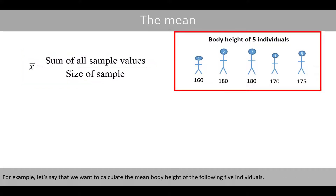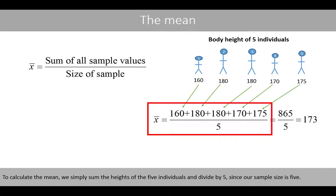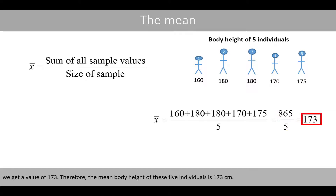For example, let's say that we want to calculate the mean body height of the following five individuals. Person number one has a body height of 160 centimeters, whereas person number two has a height of 180 centimeters, and so forth. To calculate the mean, we simply sum the heights of the five individuals and divide by five, since our sample size is five. The sum of all the body heights is 865, and when we divide this sum by five, we get the value of 173. Therefore, the mean body height of these five individuals is 173 centimeters.